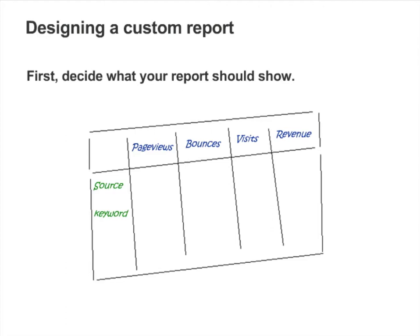This report has two dimensions, shown in green, and four metrics, shown in blue. The report will show page views, bounces, visits, and revenue for each source and keyword.